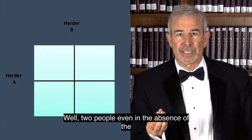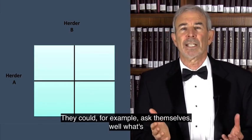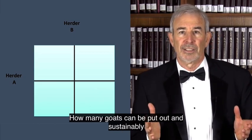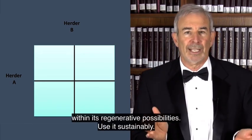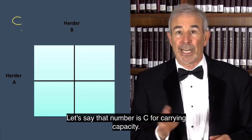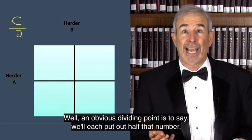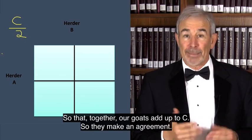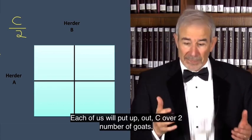Well, two people, even in the absence of the state, could get together and come to an agreement. They could, for example, ask themselves, well, what's the carrying capacity of our commons, of our grasslands? How many goats can be put out and sustainably use the commons, meaning use it, but do it well within its regenerative possibilities? Use it sustainably. Let's say that number is C for carrying capacity. Well, an obvious dividing point is to say we'll each put out half that number so that together our goats add up to C. So they make an agreement. Each of us will put out C over two number of goats. That's their agreement.